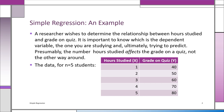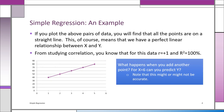We have five students. The first student studied one hour, the next two hours, three, four, and five hours. The grades on the quiz were 40, 50, 60, 70, and 80. In this unusual example, when you plot the points — every data point is an x-y pair — every single one of the points falls on a straight line.